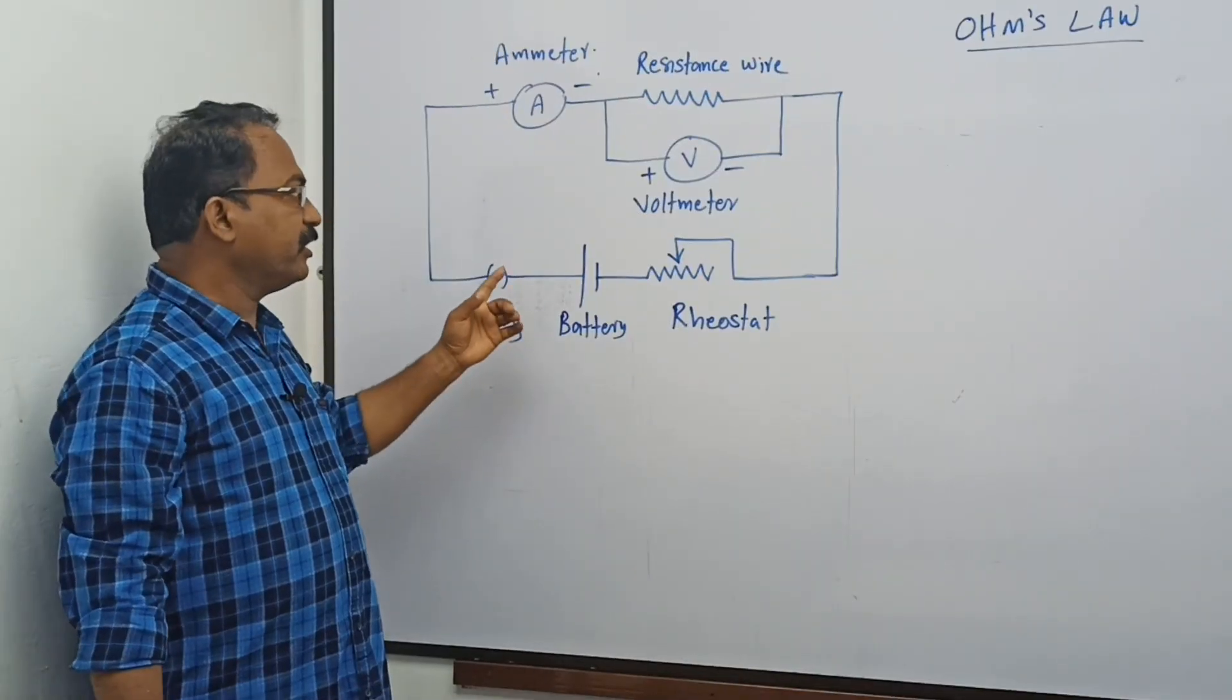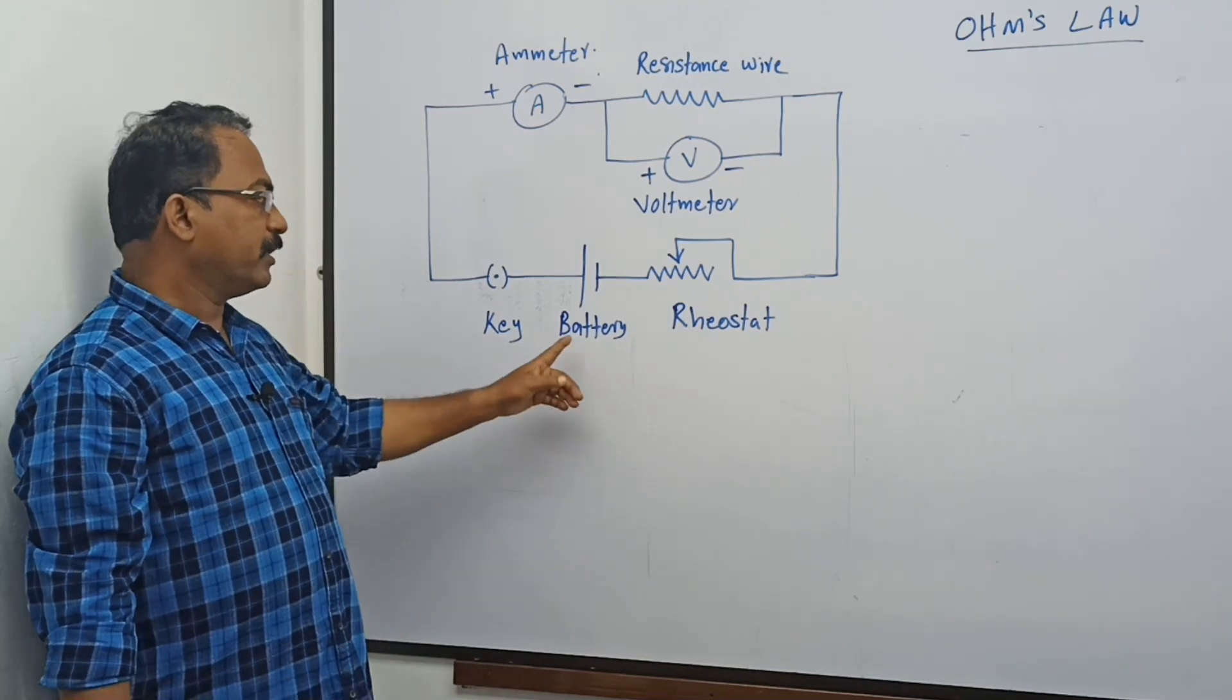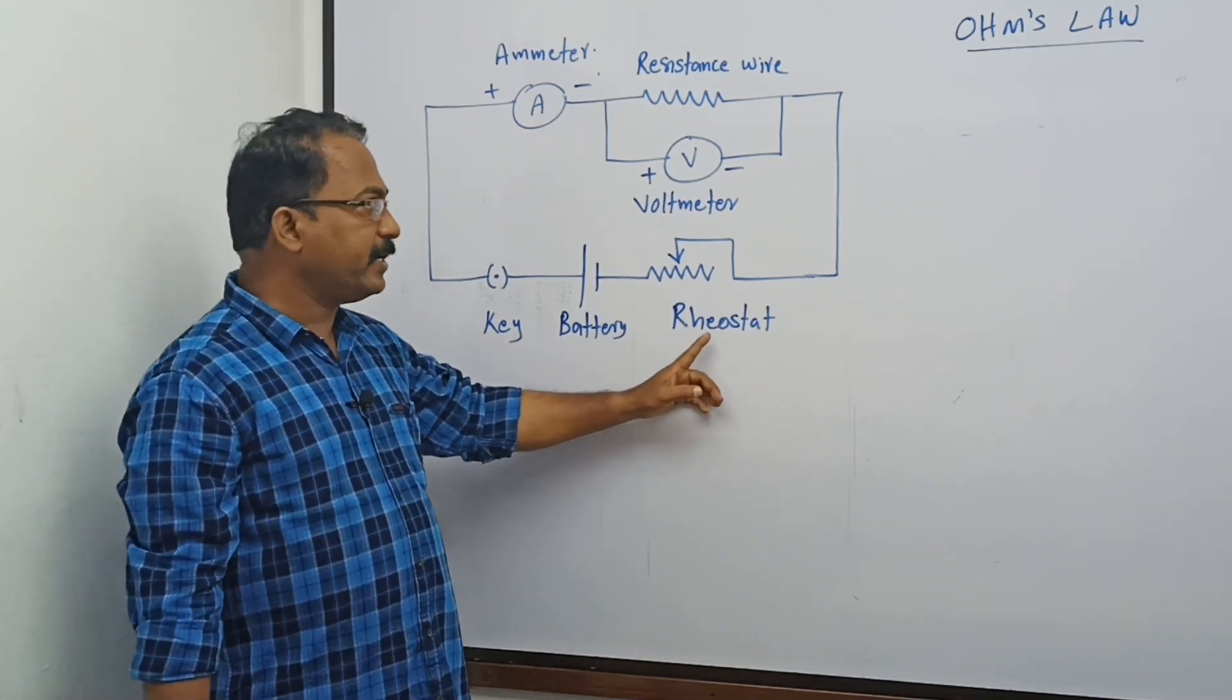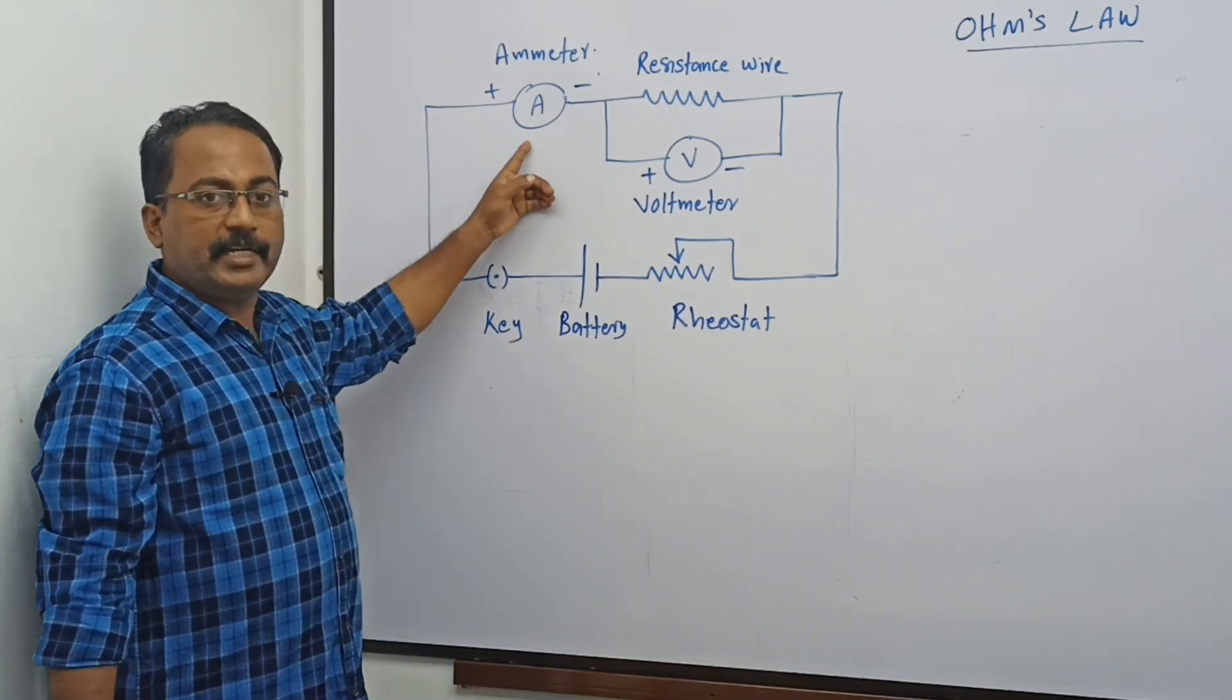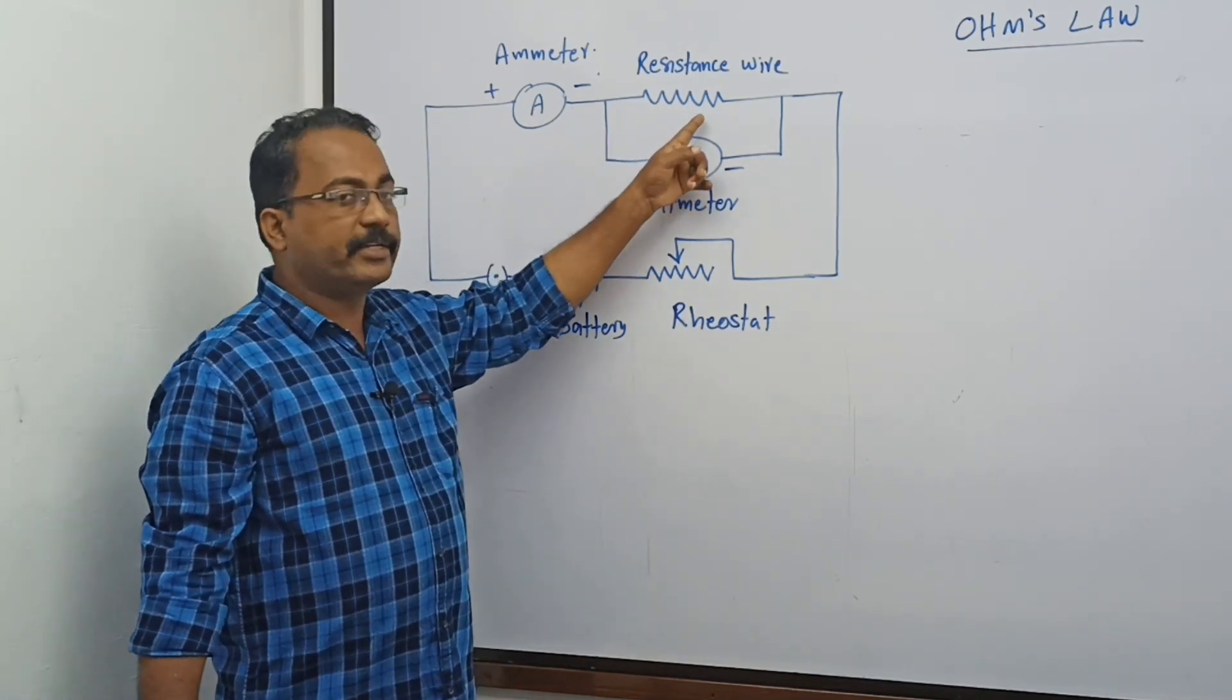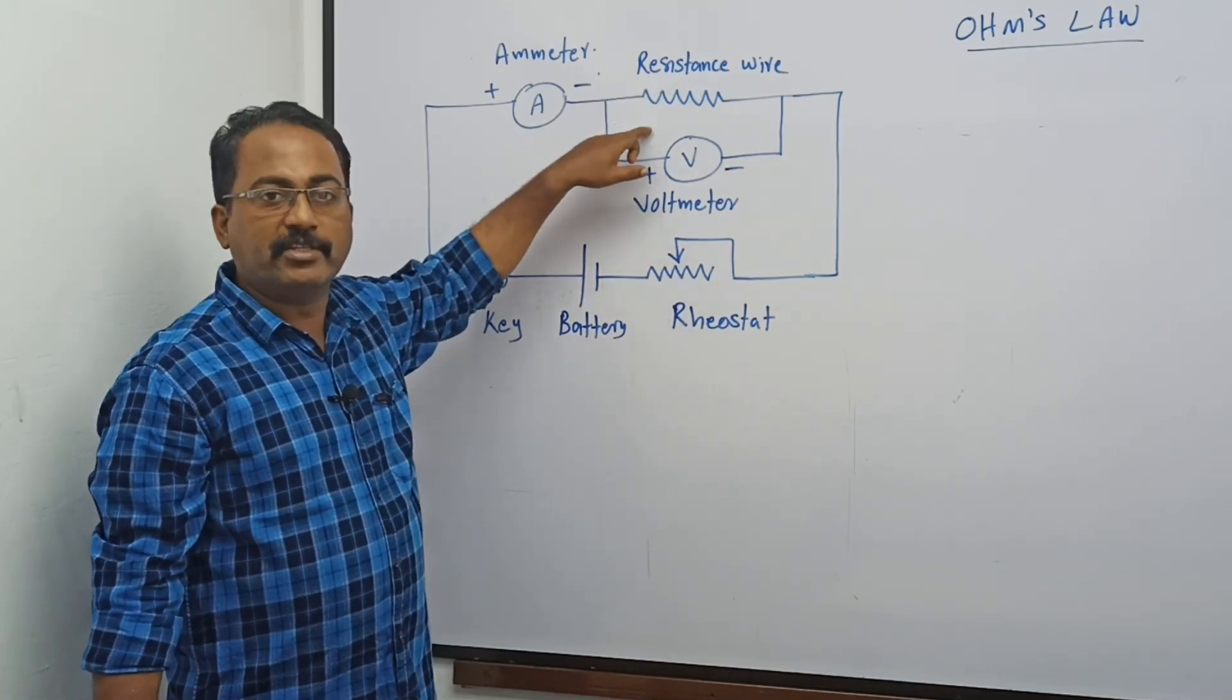Now let us see the circuit diagram for performing the experiment. There is a battery, a rheostat connected in series, a key connected here, an ammeter connected in series, the resistance wire connected, and the voltmeter connected in parallel with the resistance.